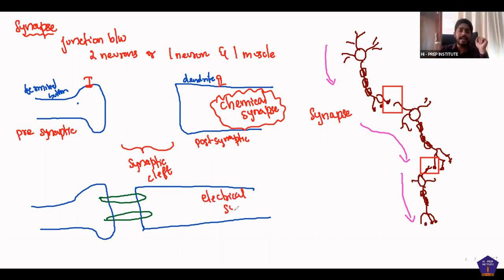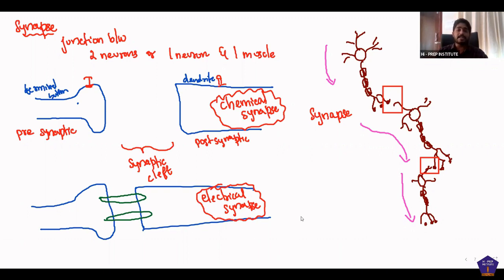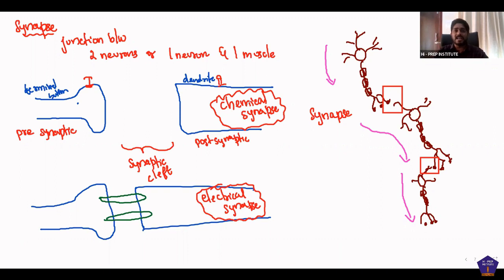This is the electrical synapse. On the other hand, this is the chemical synapse. There are two types of synapse: electrical synapse and chemical synapse. The action potential is involved — positive and negative charge suppression.